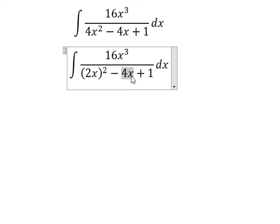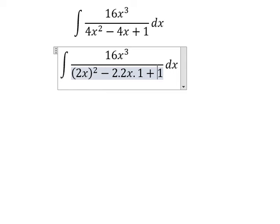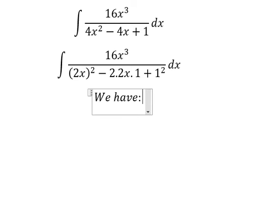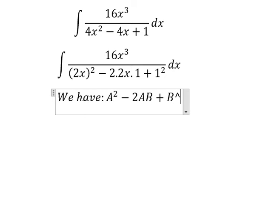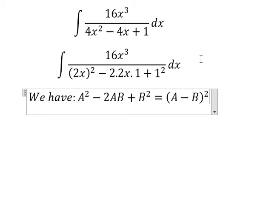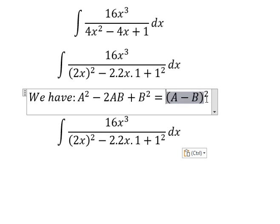In the denominator we have 2 multiplied by 2x and 1, and we have 1 squared. We can use the formula: a² - 2ab + b² equals (a - b)². So we need to rewrite the denominator using this pattern, giving us (2x - 1)².